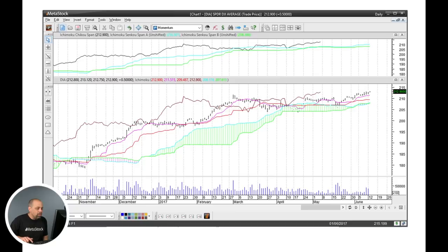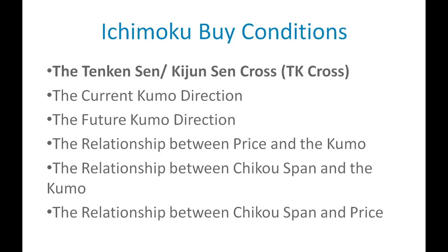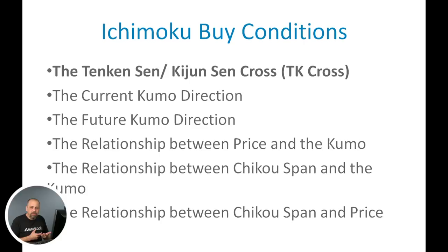On this slide you'll see the Ichimoku buy conditions we're going to talk about today. I want to say I'm going to be primarily focused on the buy conditions. However, if you reverse the signals — for example, when we talk about TK cross, if it crosses the other way, it can be reversed to a bearish condition. I'll try to remind you as we go that if it's across the other way, it's also a bullish or bearish signal, even though I'm mostly focused on what the long signals represent.